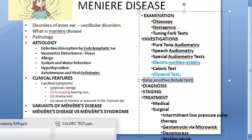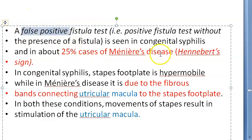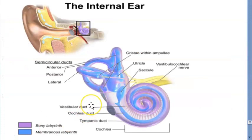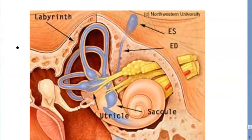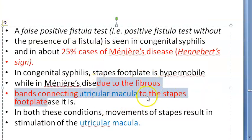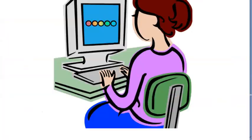Although not a formal investigation, the fistula test gives a false positive result in Meniere's disease. This is called Hennebert's sign and occurs in 25% of cases, due to fibrous bands connecting the utricular macula to the stapes footplate. Because the stapes footplate is very close to the utricle and saccule, pressure is transmitted to the inner ear, producing a false positive result.